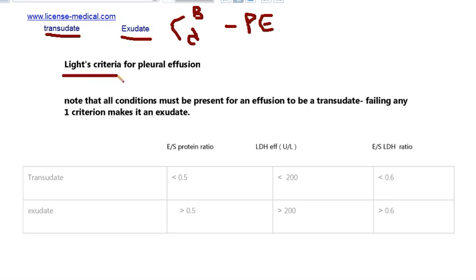For this criteria, we use three parameters. These three parameters are: effusion over serum protein ratio, LDH in the effusion, and effusion over serum LDH ratio. Note that in transudate, all these parameters must be present.